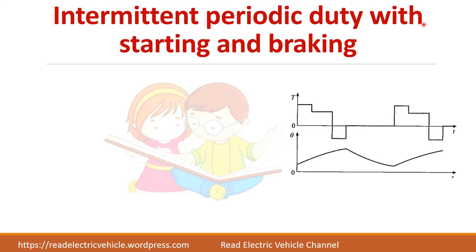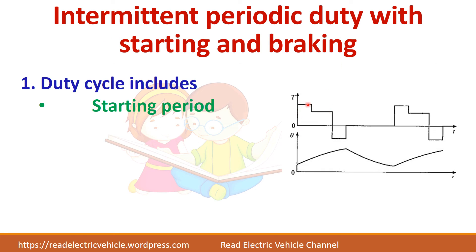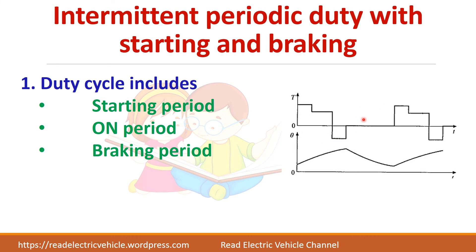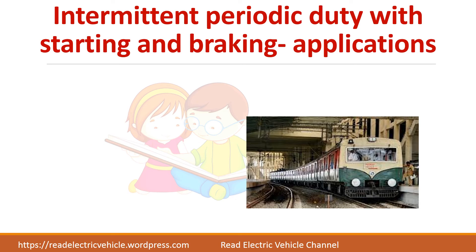In intermittent periodic duty with starting and braking, you have a starting period, an on period, a braking period, and a rest period. If you take the electric train — it will be heavier in mass — so both the starting period and the braking period should be taken into consideration. This is the best example for this class of duty.